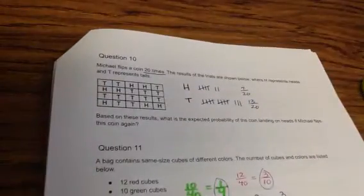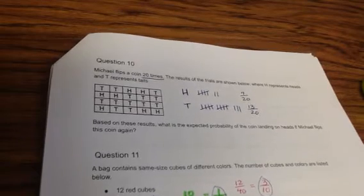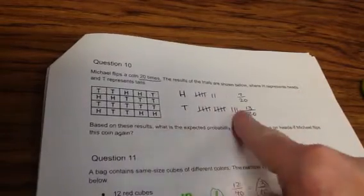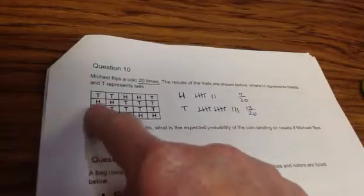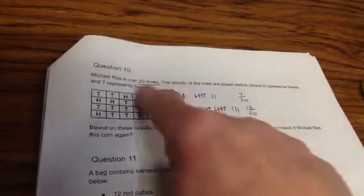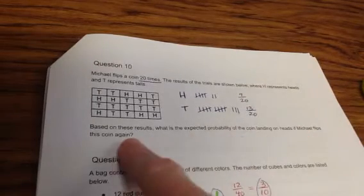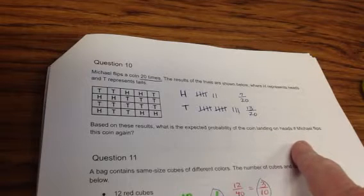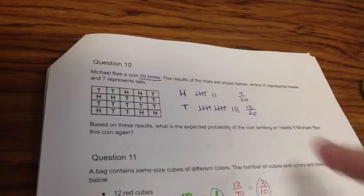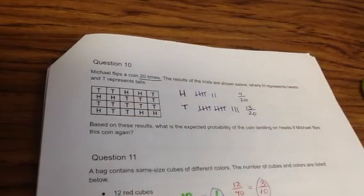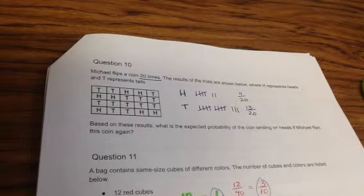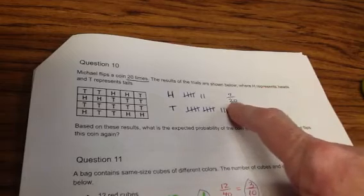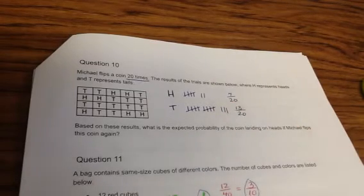Number nine. Michael flips a coin 20 times. The results of the trials are shown below, where H represents heads and T represents tails. So I used a tallying and I counted up all the heads and all the tails. So we had 7 heads out of 20 and 13 tails out of 20.